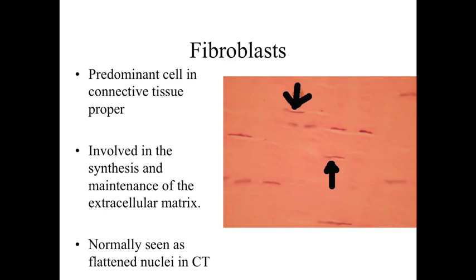They're going to synthesize it, but as we see in all biological systems, things are going to start to break down. So the fibroblasts are going to be continually moving through a connective tissue — staying as residents of the connective tissue — synthesizing and maintaining the extracellular matrix and repairing it as they go. You can see these cells normally as flattened nuclei pressed up against collagen bundles or collagen fibers. If you see a nice flattened nucleus in a good region of connective tissue, chances are you're looking at the nucleus of a fibroblast.